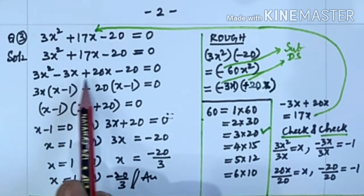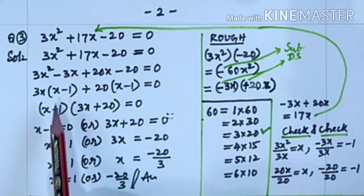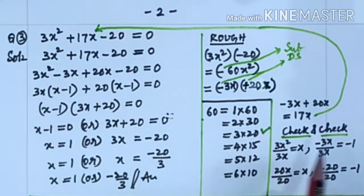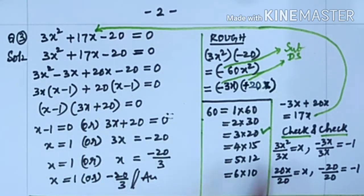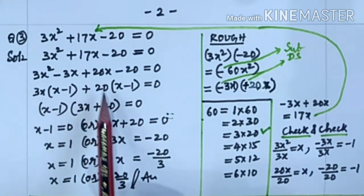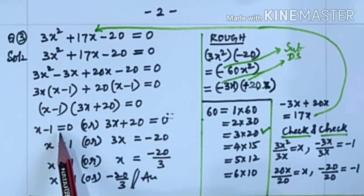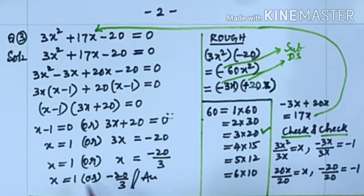3x² - 3x + 20x - 20 = 0. 3x² ÷ 3x is x; minus 3x ÷ 3x is minus 1. 20x ÷ 20 is x; minus 20 ÷ 20 is minus 1. Equal to 0. These two are same. So (x - 1)(3x + 20) = 0. Either x - 1 = 0 or 3x + 20 = 0. x = 1 or x = -20/3. Answer.